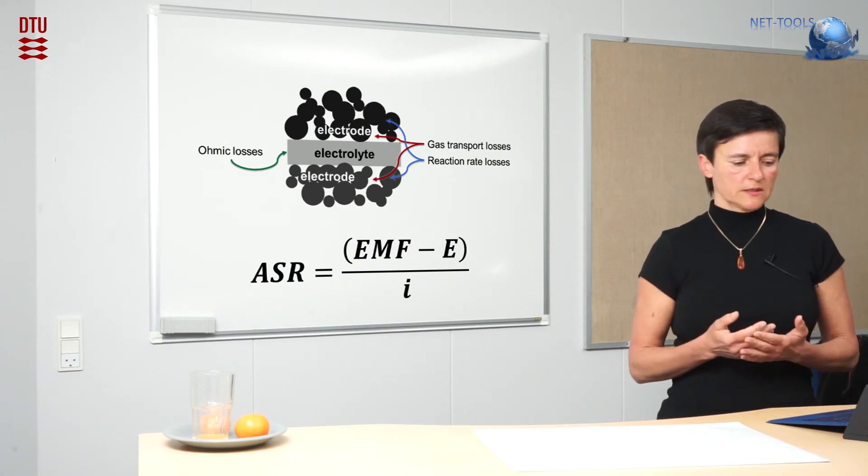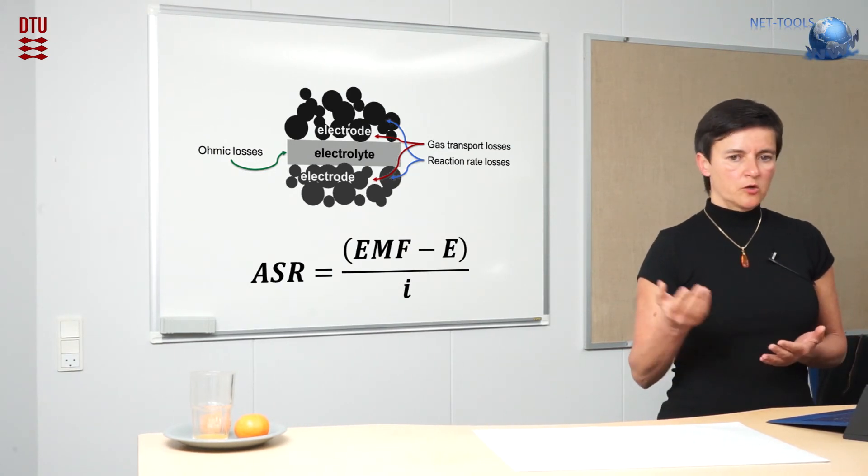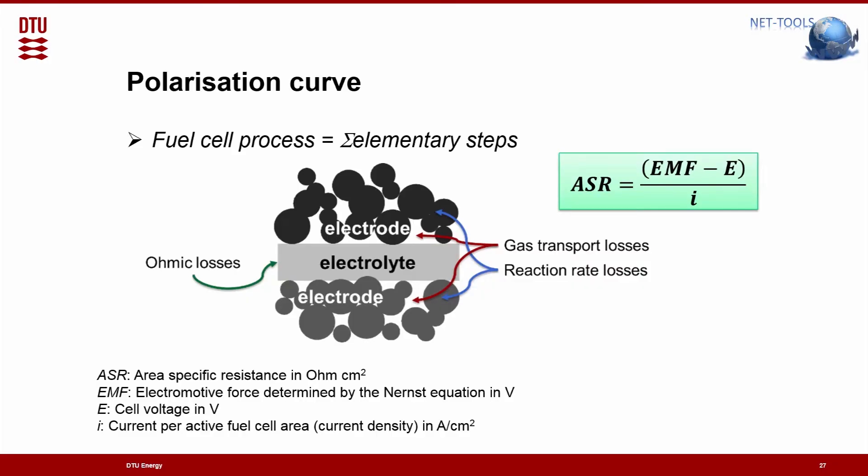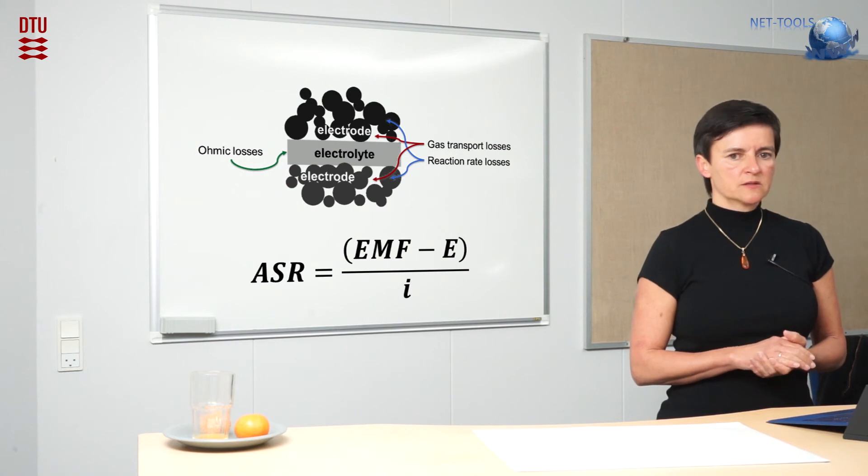And this overall resistance of the cell is expressed by the term shown on the upper right: the area-specific resistance. This is the theoretic voltage minus the measured voltage divided by the current. And of course the aim is to have this resistance as small as possible.